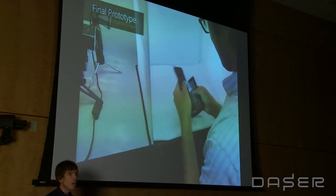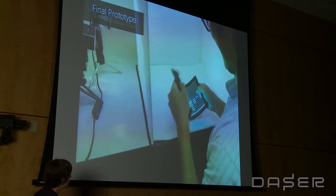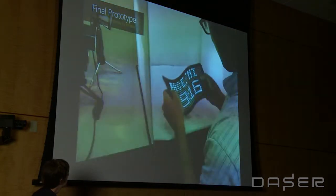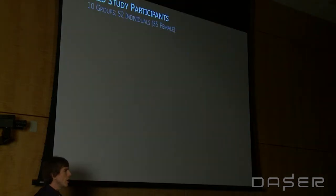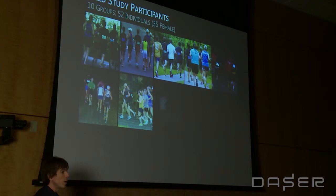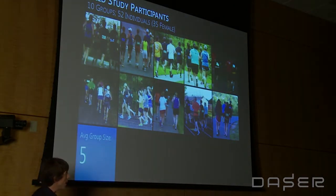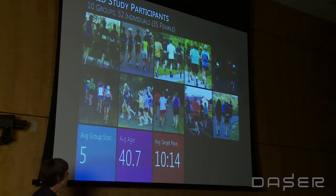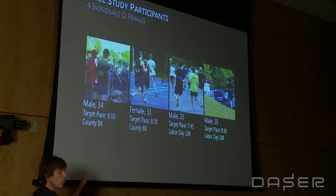We ended up working with a company called Arrow Gear, using a pre-production display for our final shirts. The shirts showed four different kinds of metrics, and we also had a shared visualization to help people track their pace over time. We deployed this with ten running groups in the D.C. area. On average, group sizes were five, average age around 41, average pace 10–14 minutes per mile, and average run length 3.5 miles. We also deployed this in races.